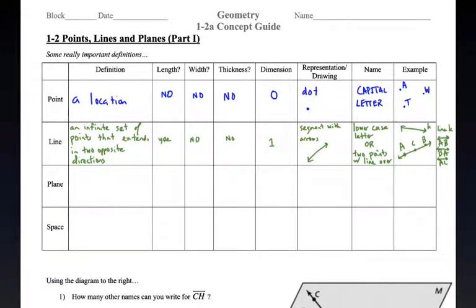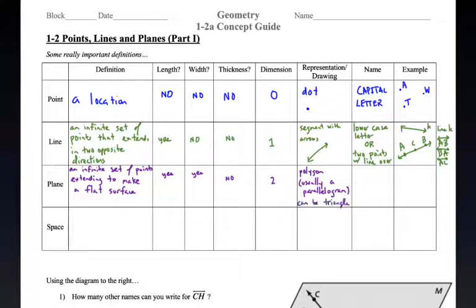That's what a line is. It just goes in one particular direction. A plane, well, it basically creates a flat surface. It's an infinite set of points extending to make a flat surface, like the piece of paper that you're using. It's an example, a representation of the plane. It's got length and width, but no thickness. It's got two dimensions. A two-dimensional flat surface, like your desk, like a piece of paper, like a wall. We represent it with a polygon. It's usually a parallelogram, but it can also just simply be a triangle. A triangle is the most basic representation of a plane.